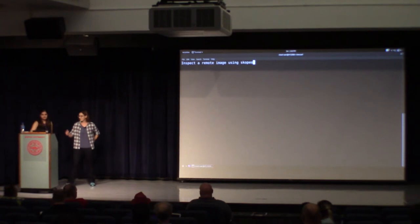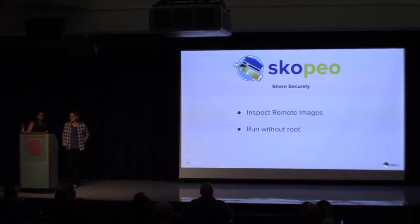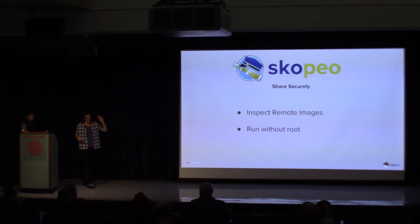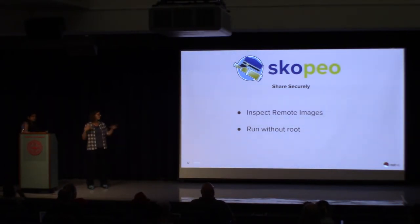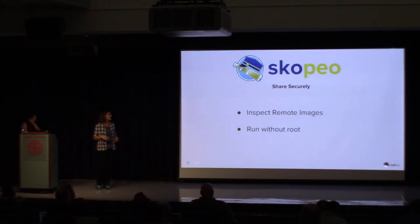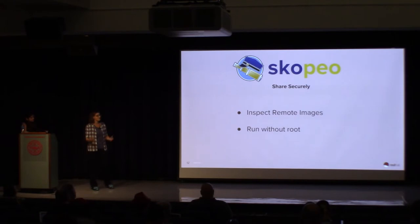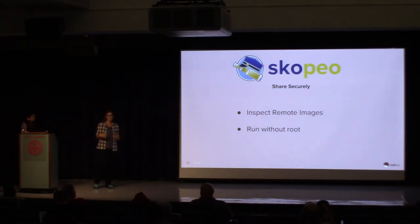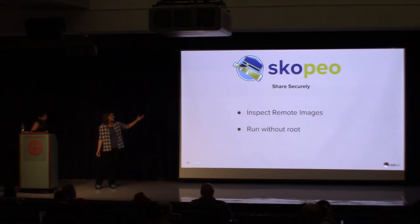Back to slides. Skopeo — so we've created the image and played around with it locally with Podman. Now we're ready to manage the image. When you add security to a system, the first thing you want to do is not have to run root, and there's no reason to run root when you're managing your images. Skopeo was originally designed so that we could inspect a remote image from a remote registry. Before Skopeo, in order to check out an image, you had to download that image to your system and then run inspect on it.